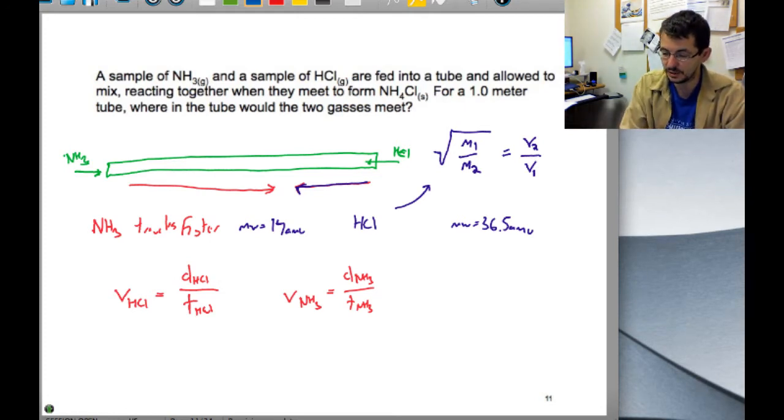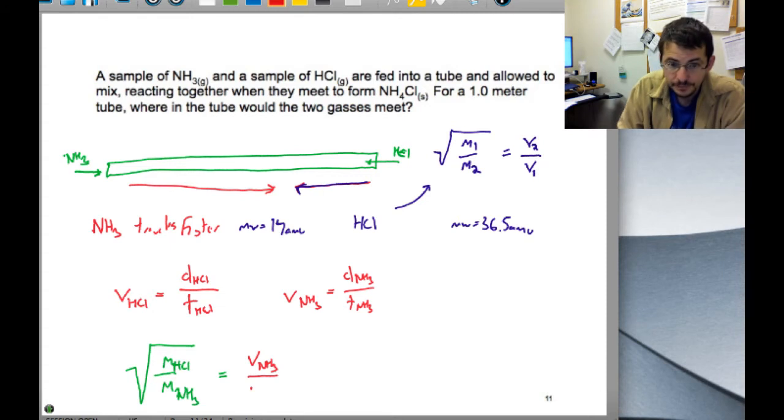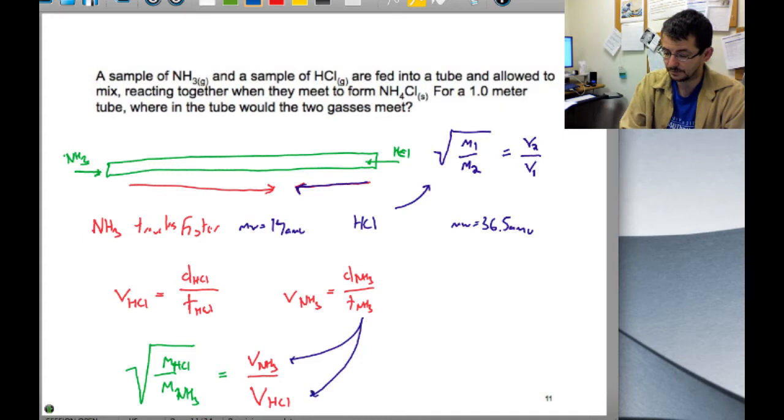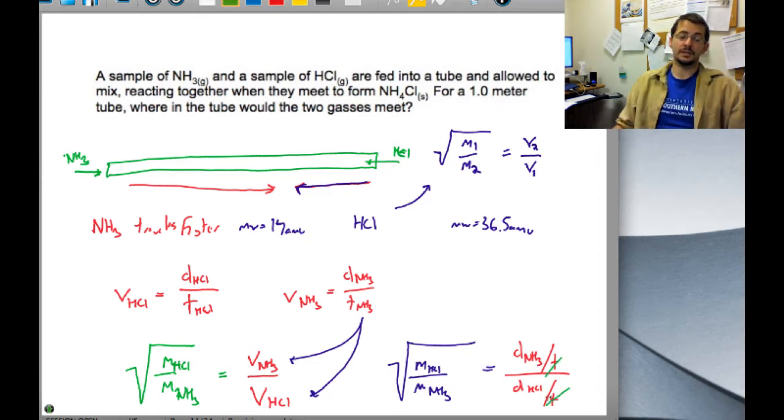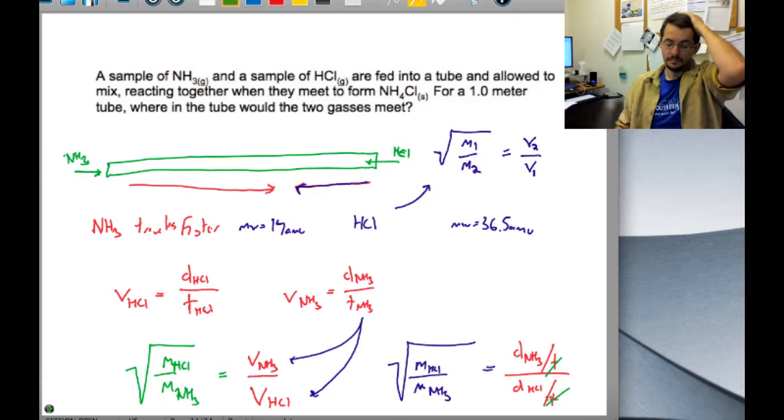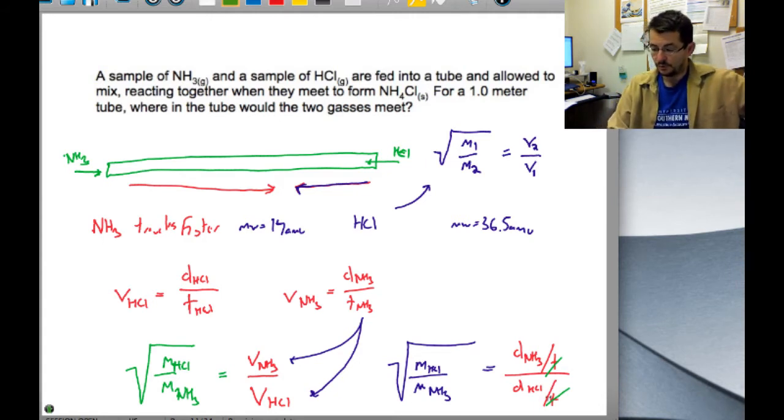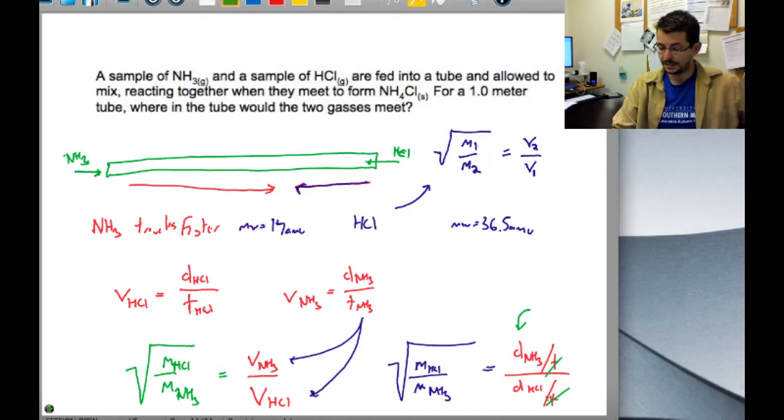If we plug these equations into our Graham's Law statement, we get a bunch of constants divided by the velocity of HCl. If we plug in these statements into each of these respective components, the temperatures and times drop out because they are constants—they are the same, and two numbers that are being divided by one of the same become one. This leaves us with the ability to solve for the ratio of the distances. The last caveat is that the distance ammonia travels plus the distance HCl travels equals one meter from the problem.